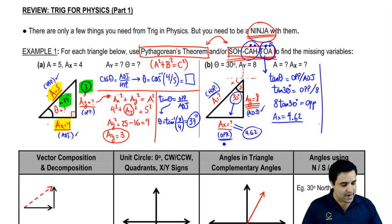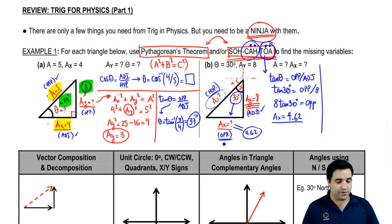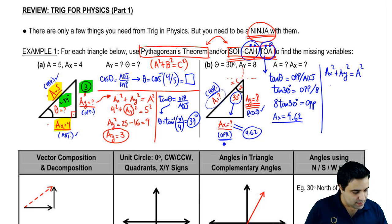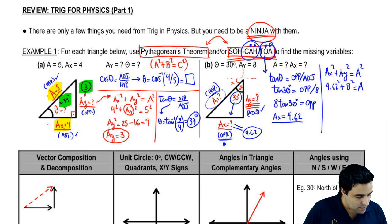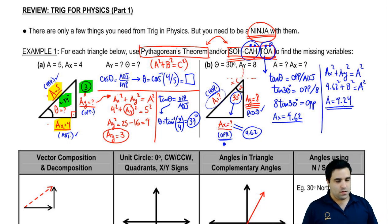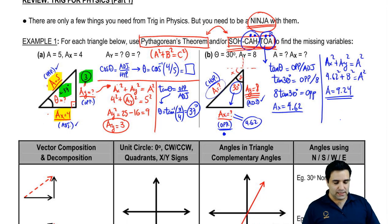Now I have two sides so I can find the third using the Pythagorean theorem. AX squared plus AY squared equals A squared: 4.62 squared plus 8 squared. Taking the square root and plugging into the calculator, I get A equals 9.24.